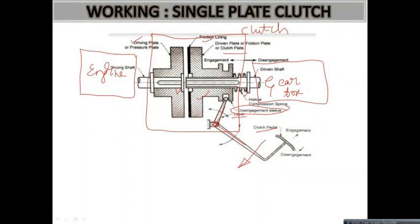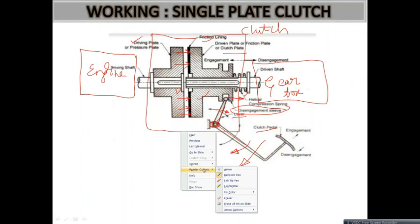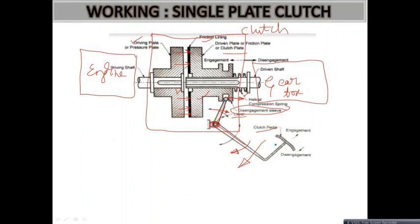Suppose you want to disengage the driving plate from the driven plate — you operate the clutch pedal. As you exert force on the clutch pedal, through a lever mechanism with a pivot, the lever moves down and oscillates in the clockwise direction. The small-length lever oscillates in the right-hand direction, moving the sleeve to the right side — this causes the disengagement of the driven plate or clutch plate from the driving plate.